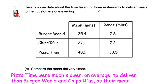Question number three: here's some data about the time taken for three restaurants to deliver meals one evening. The restaurants are Burger World, Chips-R-Us, and Pizza Time. The mean delivery time for Burger World is 25.4 minutes, Chips-R-Us is 27.1 minutes, and Pizza Time is 48.1 minutes. In terms of the range, Burger World and Chips-R-Us have ranges of 7.8 and 7.2 minutes — so their delivery times are quite close together — whereas Pizza Time's range is much greater at 33.5 minutes.